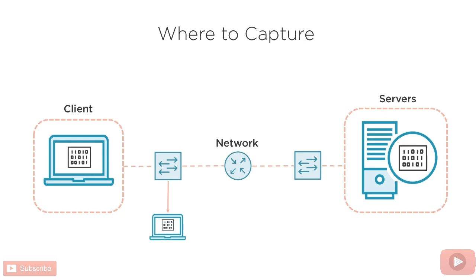Some people will also just install Wireshark on the server itself and capture from there. This certainly doesn't break rules, but ideally we want to capture outside of the device under test. Basically, installing Wireshark will add more load to the system, and the packet capture driver may not display data exactly as it looks on the wire, which can be misleading. In short, capture on the span port if you can, and capture on the end device only if you absolutely have to.